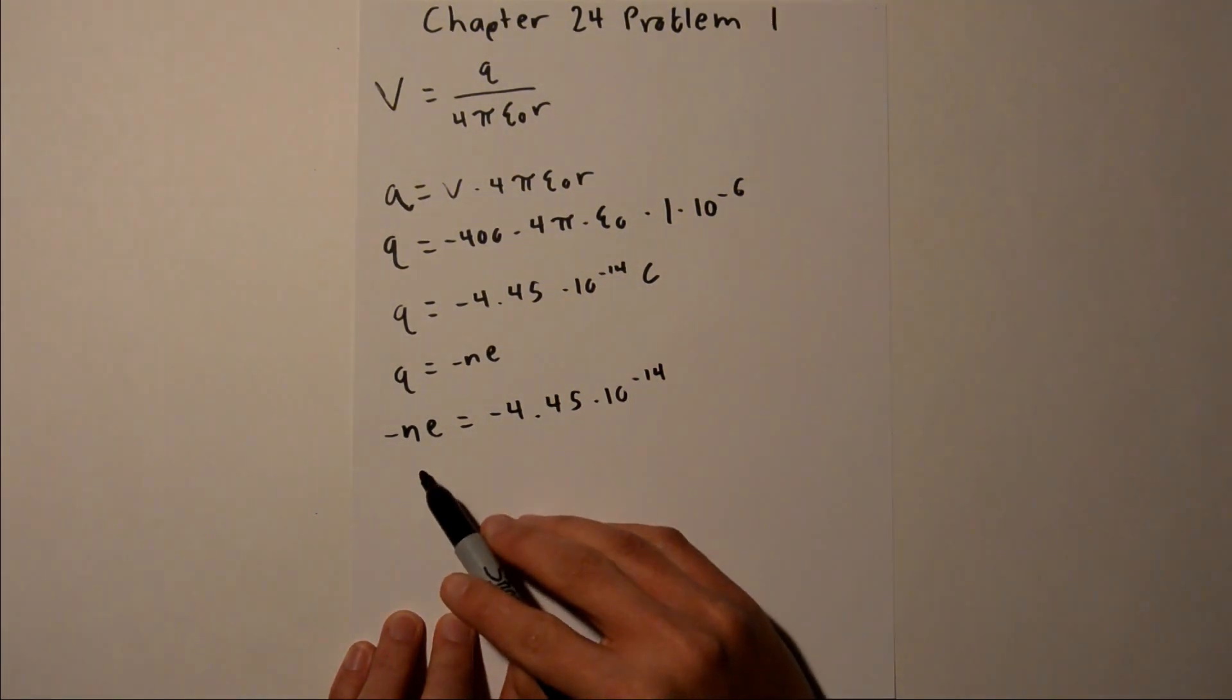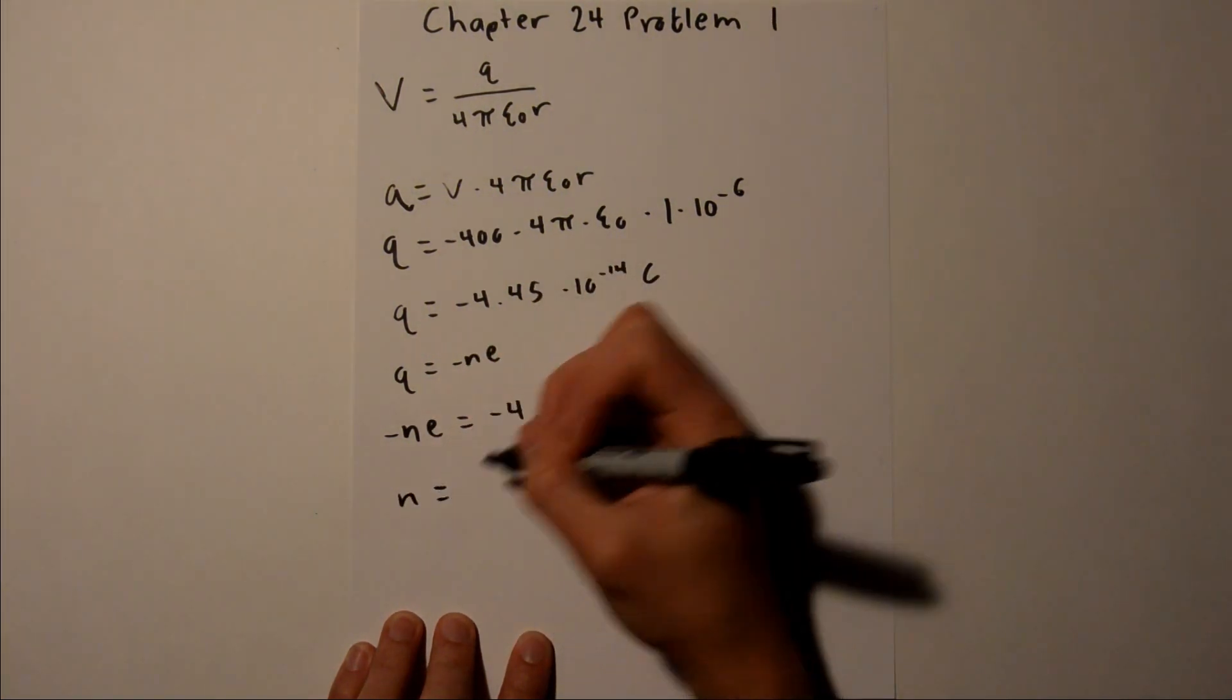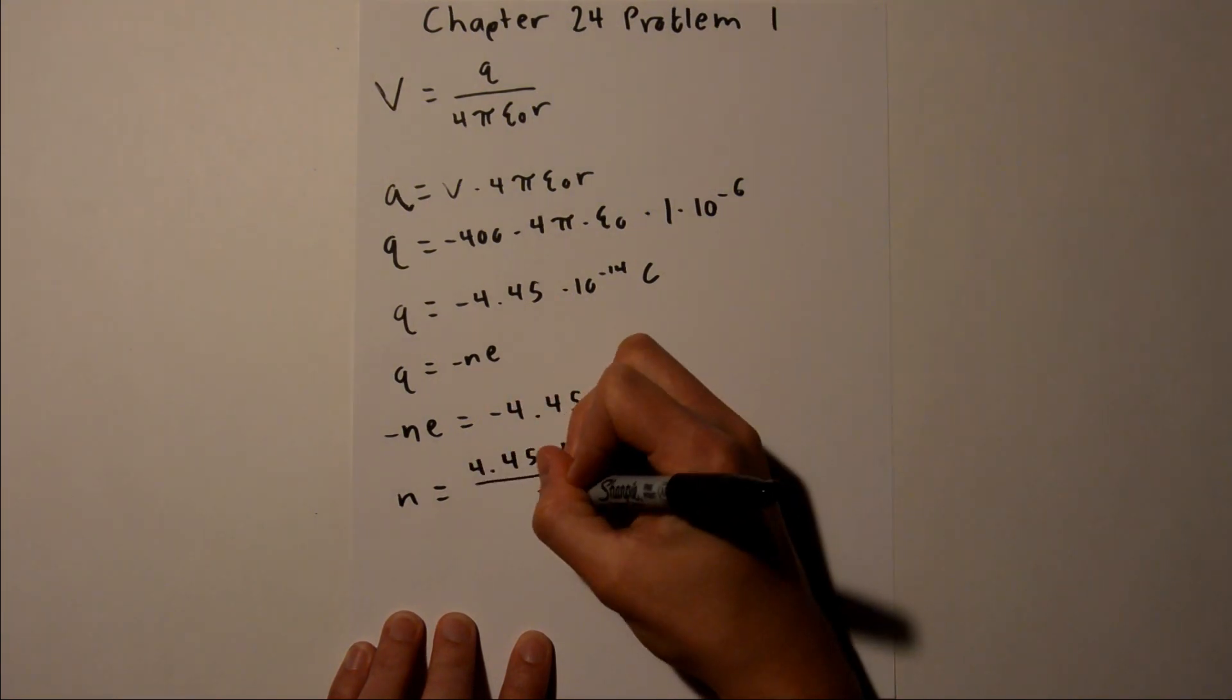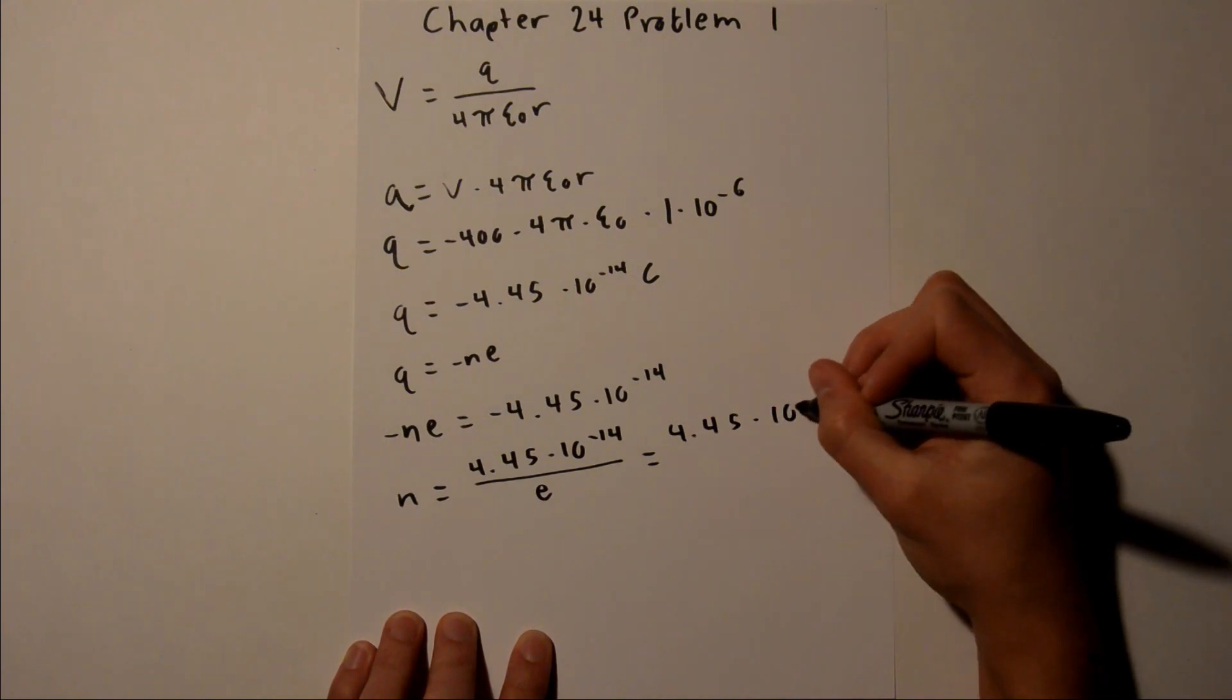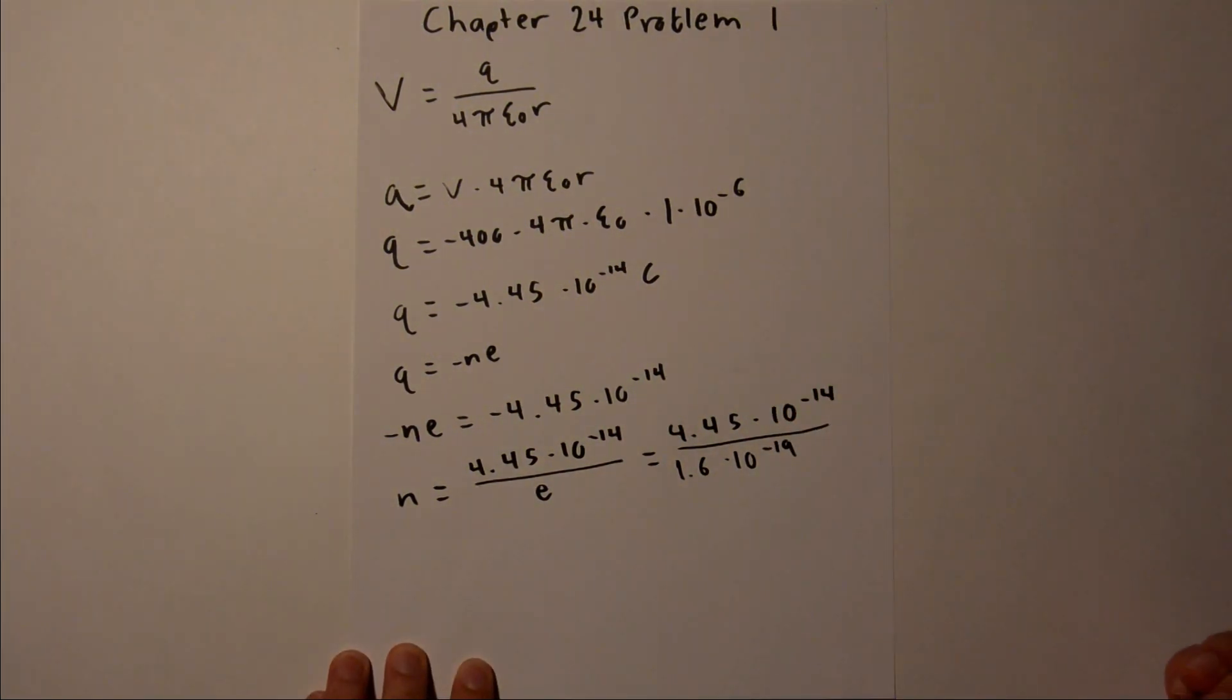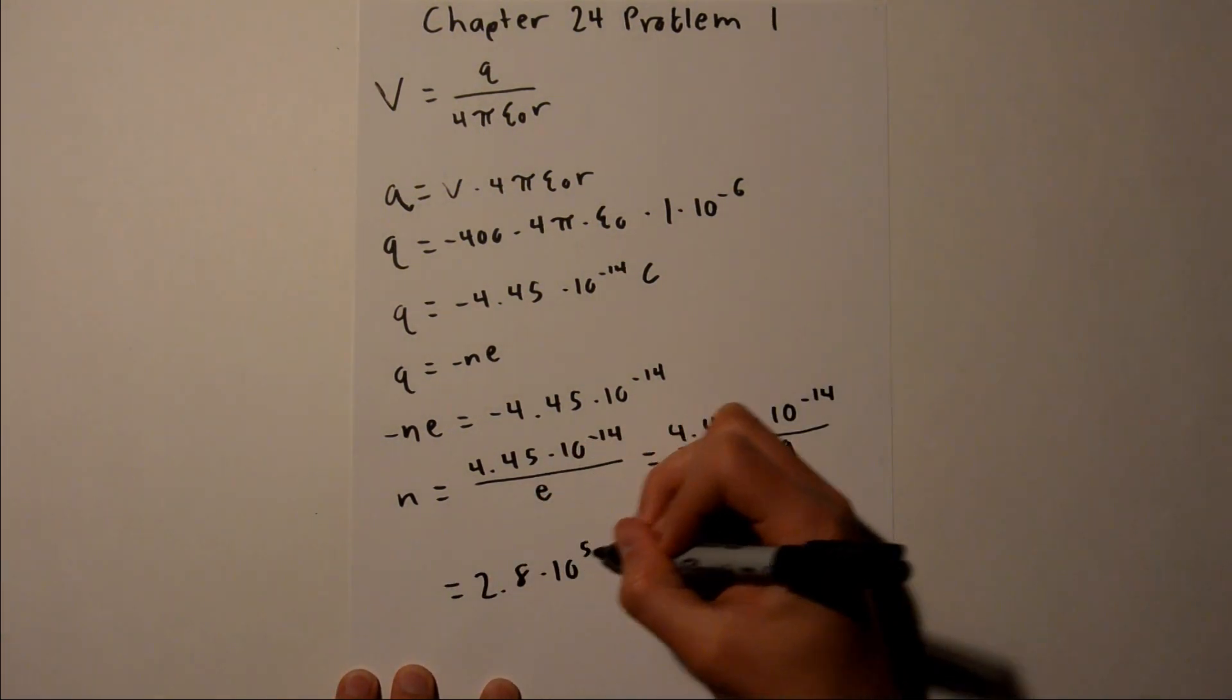And we need to solve for N, so we can drop the negatives since there's a negative on either side, and we can also divide by E. So this becomes N equals 4.45 times 10 to the negative 14 divided by E, which is 4.45 times 10 to the negative 14 divided by 1.6 times 10 to the negative 19. And when you plug that into your calculator, you should get 2.8 times 10 to the 5 electrons.